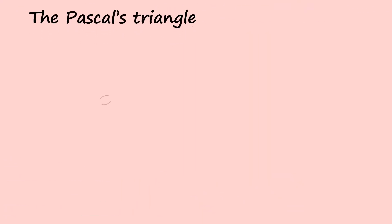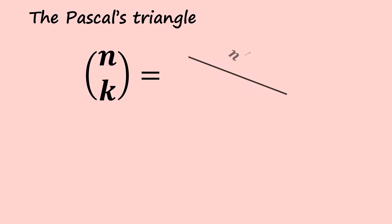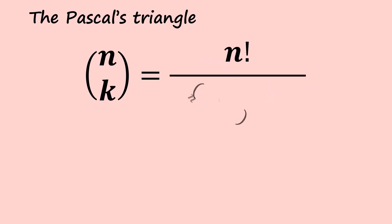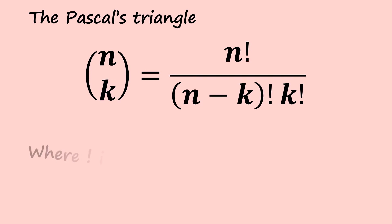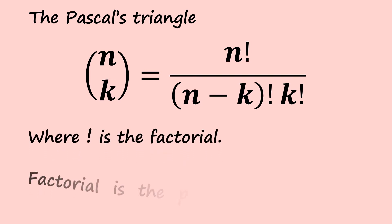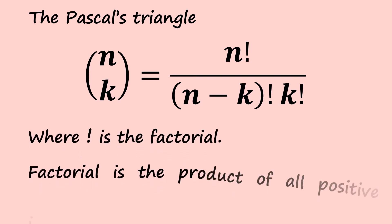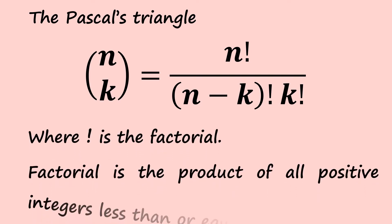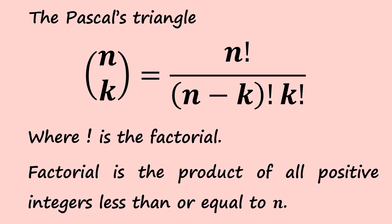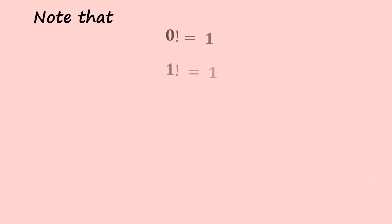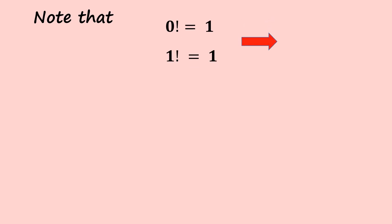For Pascal's triangle, we have n choose k equal to n factorial divided by n minus k factorial times k factorial, where the exclamation mark denotes factorial. Factorial is the product of all positive integers less than or equal to n. We need to know that zero factorial is one and one factorial is one.